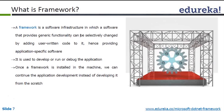Anything like the minimum things related to application development continuation is called a framework. A framework is software infrastructure in which software provides generic functionality that can be selectively changed by adding user-written code to it, hence providing application-specific software. If you have an infrastructure, we can directly go to application development. If you don't have an infrastructure, people will start building it up. Infrastructure is mandatory for any place where we want to continue. For every application, we need to have an infrastructure — instead of writing from scratch, we can directly continue.